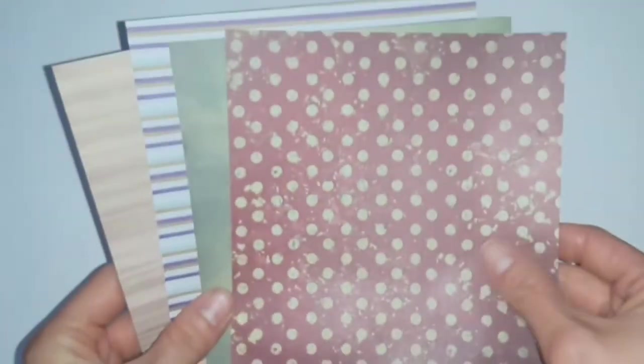To begin, you want your paper. I'm using some that already has a pattern on it, so it'll create a self-striping effect, but you can color it in yourself if you prefer.